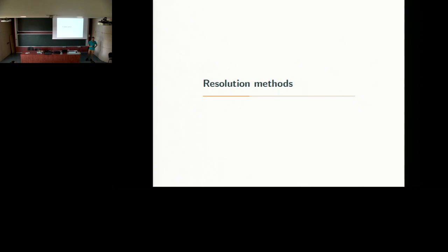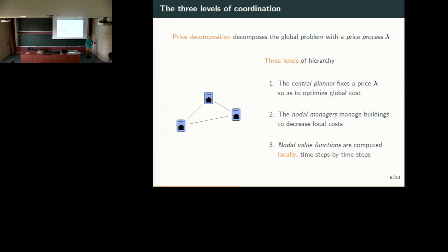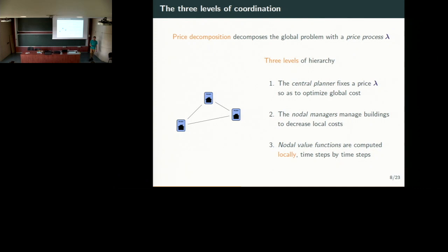Let's talk about price and resource decomposition. How can you decompose the problem using price decomposition? We will consider three layers of management. The first layer — the global manager or central planner — will fix a price lambda and send this price to each building in the graph. Then the buildings consider the price and manage their different stocks and production means so as to minimize their operational cost plus the penalization induced by the price given by the central planner.